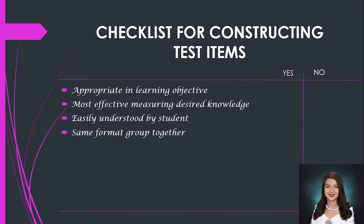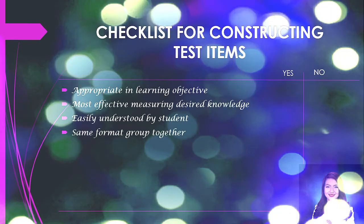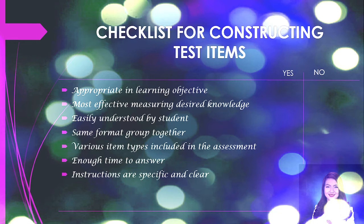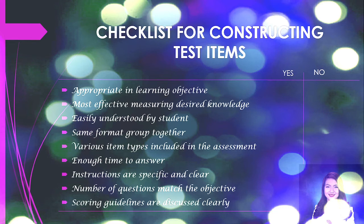Next, you must know if items of the same format are grouped together. For example, multiple choice questions numbered 1 to 15, true or false from 15 to 30, and essay from 30 to 50 — it's up to you how you group the different formats. Check whether various item types are included in the assessment, whether students have enough time to answer all items, whether the test instructions are specific and clear, and whether the number of questions targeting each objective matches the weight of importance of that objective. Lastly, you must know if the scoring guidelines are discussed clearly and are available to students.